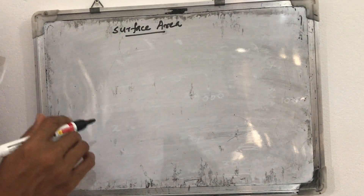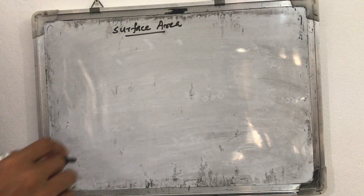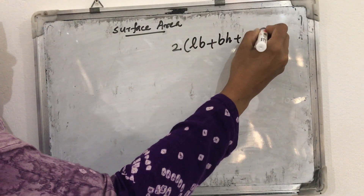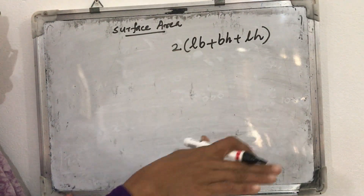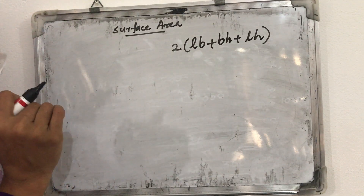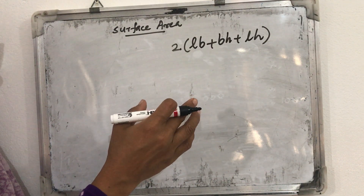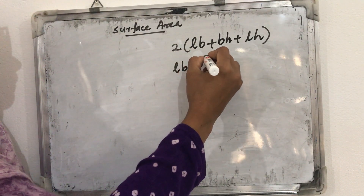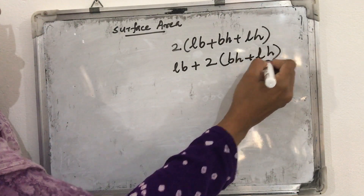The bottom face and top face area will be length into breadth. From the total surface area equation, we know 2(LB + BH + LH). One face we want to avoid. Both bottom and top have area L × B. Since the bottom face need not be painted, from the 2LB term, we can avoid 1LB. So the painted surface area formula becomes: LB + 2(BH + LH).